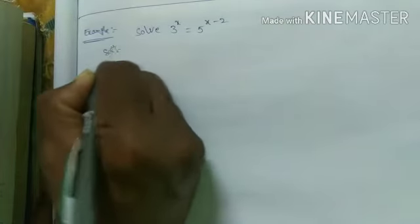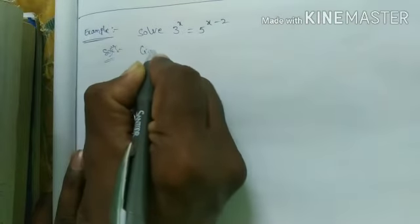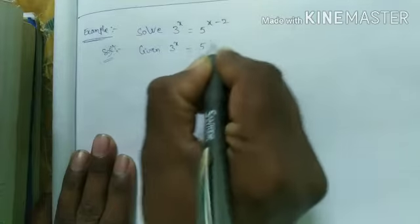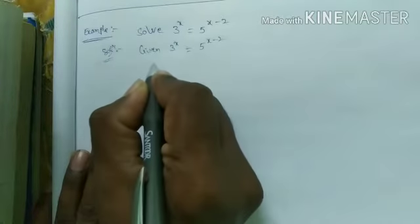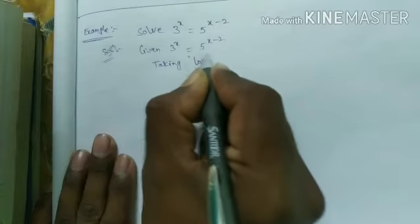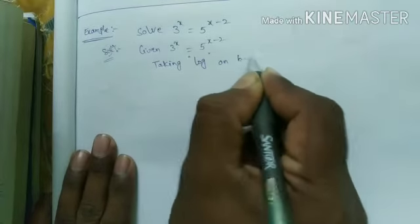Solution. Given 3 power x equal to 5 power x minus 2. Taking log on both sides.